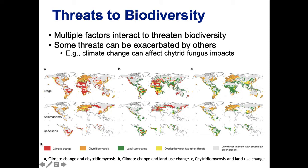This figure shows effects on amphibians and places where different threat factors interact. The red shows where climate change poses a problem for amphibian species. We have frogs on the top, salamanders in the middle, and caecilians on the bottom. Caecilians are the third group of amphibians — they look like a large worm but share the basic characteristics of frogs and salamanders, except they have no legs.